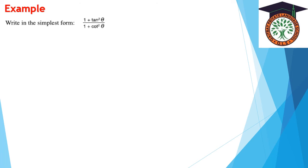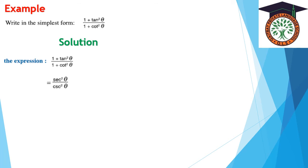Another example: write the simplest form of (1 + tan²z)/(1 + cot²z). Since 1 + tan²z = sec²z and 1 + cot²z = csc²z, this equals (1/cos²z) ÷ (1/sin²z) = sin²z/cos²z = tan²z.